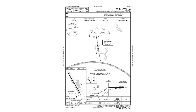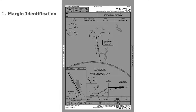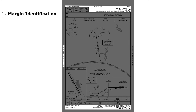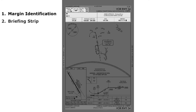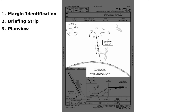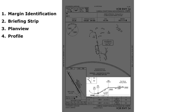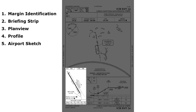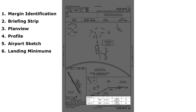No matter what approach plate you're looking at, each one is going to be split into six sections: the margin identification, the briefing strip, the plan view, the profile view, an airport sketch, and the landing minimums.